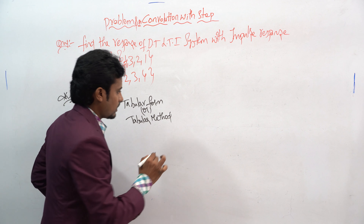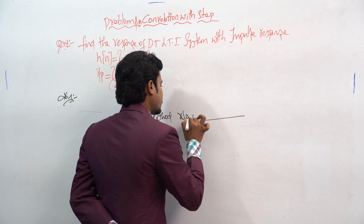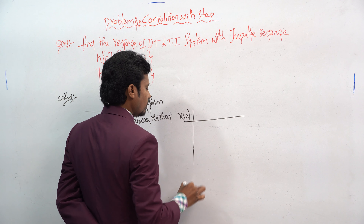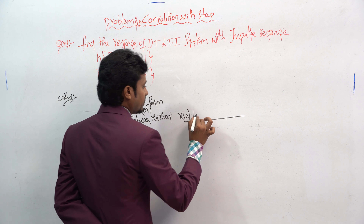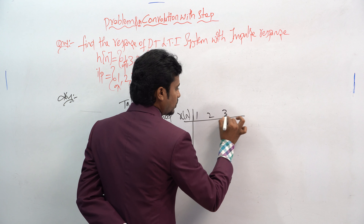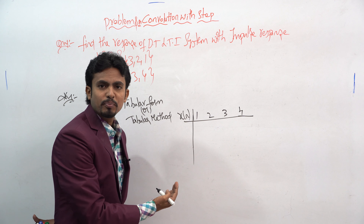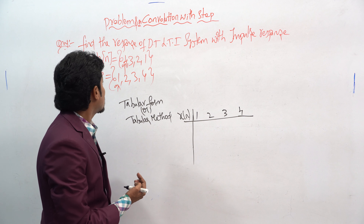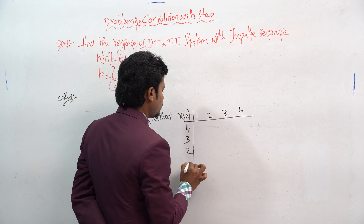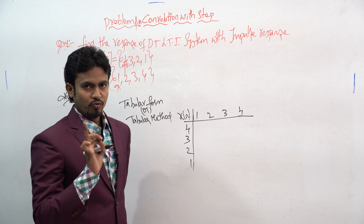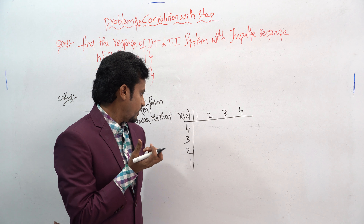Here you can see the given input x[n] is {1, 2, 3, 4} and the impulse response is {4, 3, 2, 1}. So here is how you write the tabular form. This is x[n] — the input — which is 1, 2, 3, and 4. And here you write your impulse response, which is given as 4, 3, 2, and 1.